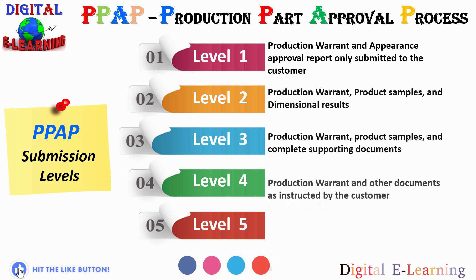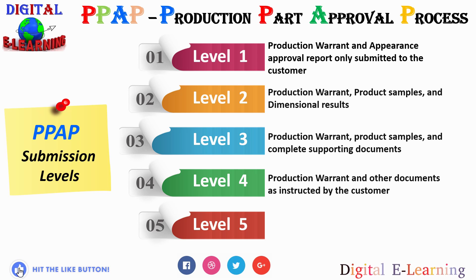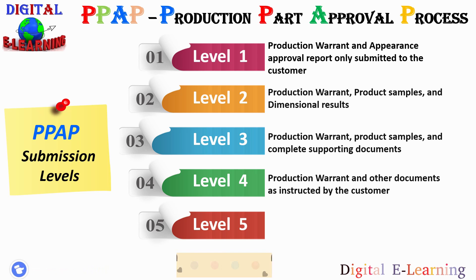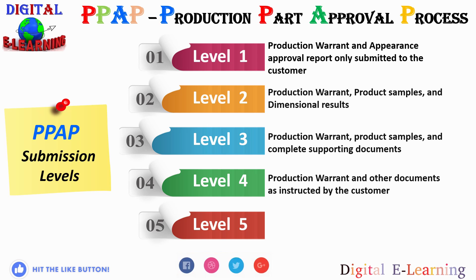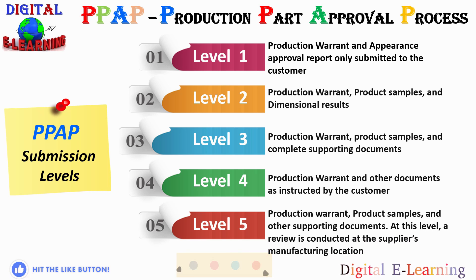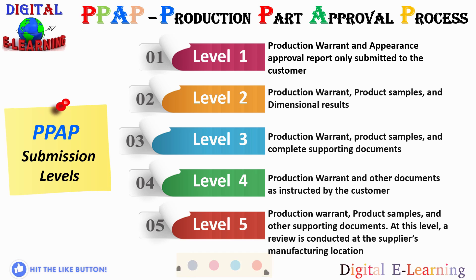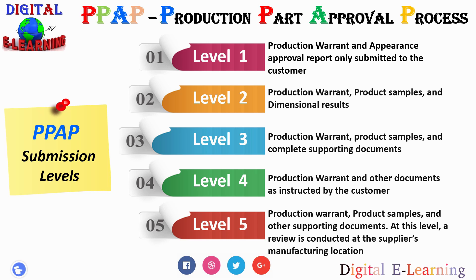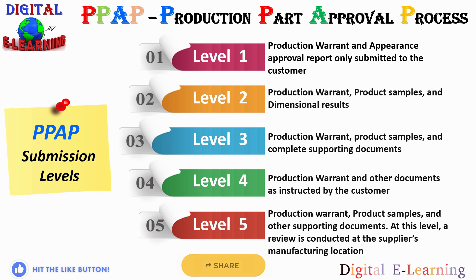Level four talks about production warrant and other documents as instructed by the customer. This level is generally used when there is a significant revision or changes to parts that have existing approved PPAPs, or significant changes in the method of production of parts with existing approved PPAPs, and when the quality planning is unchanged. Level five is production warrant, product samples, and other supporting documents. At this level, a review is conducted at the supplier manufacturing location. This level is generally used with nearly the same expectations as level three, but with on-site verification at the supplier. It also involves situations where proprietary information is involved or when special processes need to be validated.